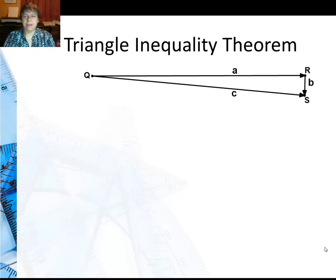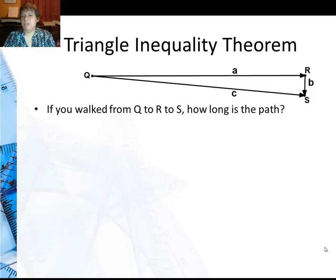The best way to think about it is to think about walking. So if you walked from point Q to R to S, you see these three points make a triangle, how long is the path? Well, it would be the length a plus the length b.